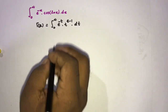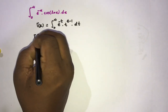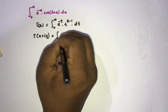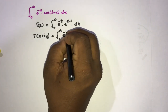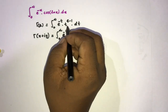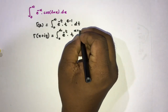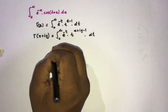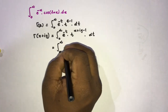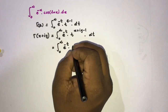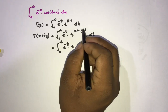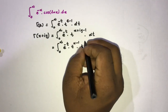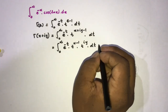Instead of c, I am going to substitute x plus iy. So gamma of x plus iy is equal to the integral from zero to infinity of e to the minus t times t to the x plus iy minus 1 dt. We can simplify this as: the integral from zero to infinity of e to the minus t times t to the x minus 1 times t to the iy dt.